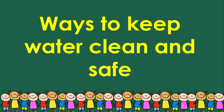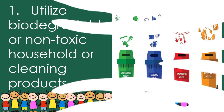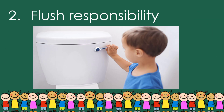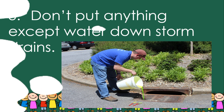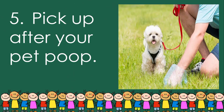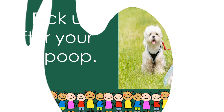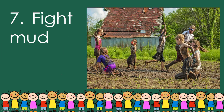Ways to keep water clean and safe: One — utilize biodegradable or non-toxic household or cleaning products. Two — dispose of waste responsibly. Three — don't put anything except water down storm drains. Four — avoid using pesticides or chemical fertilizers.